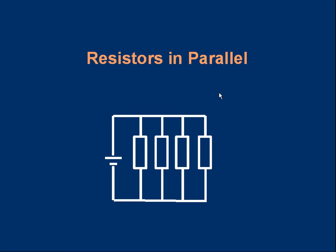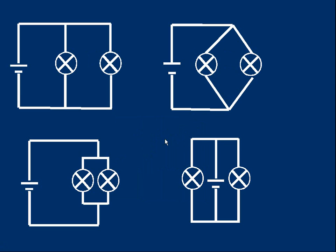Welcome to this lesson where we're going to look at how to deal with resistors connected in parallel — how to calculate the total resistance and how to use it. Let's start by making sure we can recognize things connected in parallel. Here we have two bulbs connected in parallel, and all of these circuits show the same thing: two bulbs in parallel connected to a cell. Make sure you understand that they are equivalent.